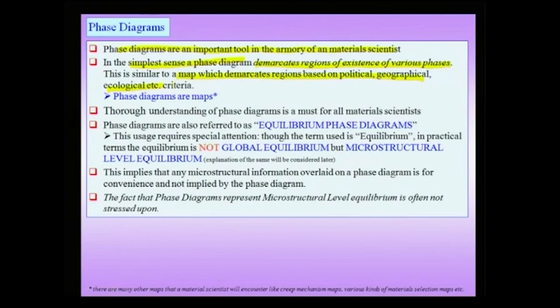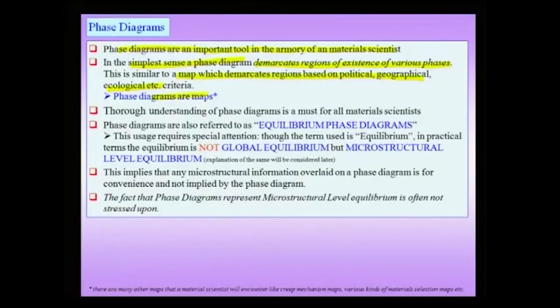For instance, when you look at a map, you know that there is grasslands in some place, mountains in some place, or one country is in one place and another country is in a different place. Here, a phase diagram is a map which demarcates different phases which exist. In a broader sense, phase diagrams are maps, and material scientists will encounter many more maps like creep mechanism maps, material selection maps, etc. Therefore, a thorough understanding of phase diagrams is a must for all material scientists.